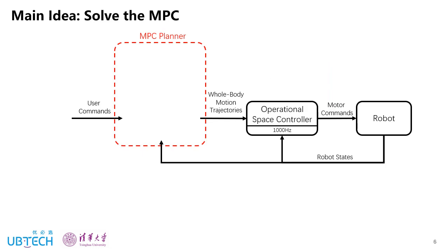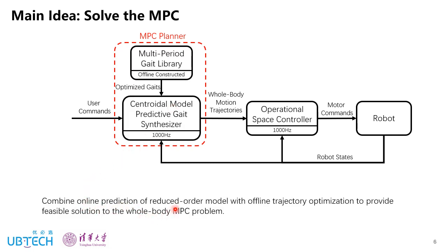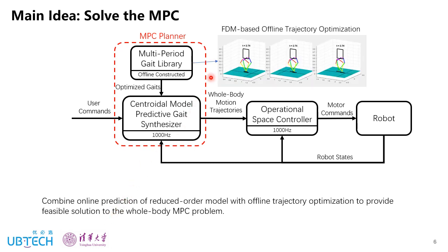This is the control architecture used in this work, and this MPC planner solves the MPC problem that we just constructed. As I mentioned before, it is extremely time consuming to directly solve this whole body MPC problem. So in this work, we propose to combine online prediction of reduced order model with offline trajectory optimization to provide a feasible solution. The multi-period gate library is offline constructed. It consists of periodic gates with different velocity and step period. It directly considers whole body dynamics and constraints. And then this gate synthesizer adjusts the motion plan and step timing by synthesizing this gate library according to online prediction of centroidal dynamics at 1kHz. So in this way, we can realize fast online planning that considers whole body constraints at 1kHz. And next, I will introduce these two parts respectively.